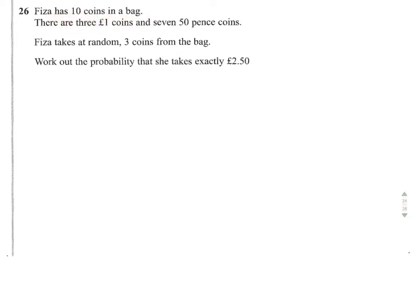So if Fiza has 10 coins in the bag, there are three one-pound coins and seven fifty-pence coins. Fiza takes at random three coins from the bag, work out the probability which she takes exactly £2.50.